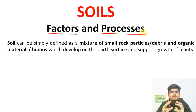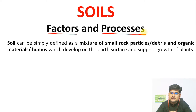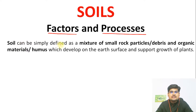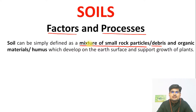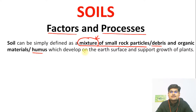There is a difference between factors forming soil and when those factors undergo different processes. We are going to learn about various factors and processes important for soil formation. First, the important point is to define soil. Soil can be simply defined as a mixture of small rock particles or debris particles — it is not an element or compound, rather it is a mixture made up of small rock particles, debris particles, and organic matters like humus which develops on the earth's surface and supports the growth of plants.